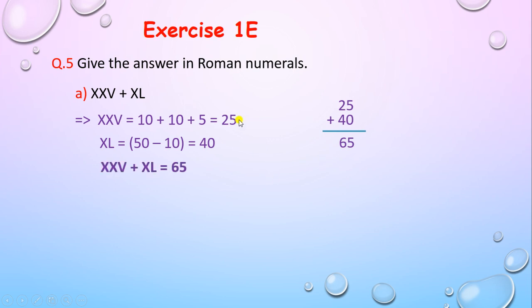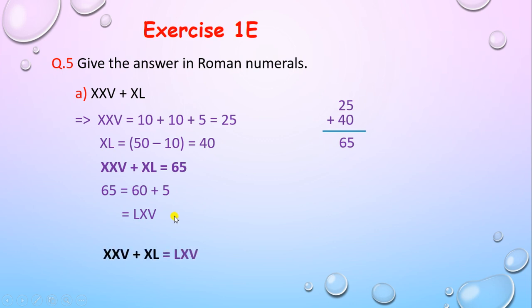We need the answer in Roman numerals, so convert 65. Write the expanded form: 60 plus 5. The symbol for 60 is LX and for 5 is V. Therefore XXV plus XL equals LXV.